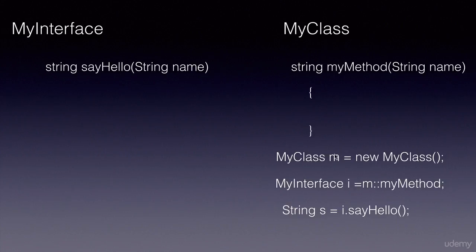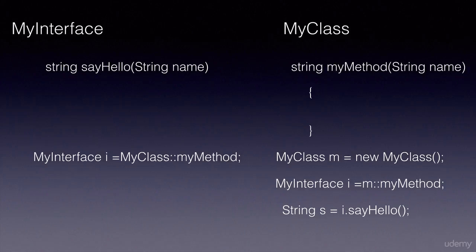This method need not be an instance method or object method — it can also be a static method. If it is a static method, we will simply use the class name, double colon, and the method name to reference the method.